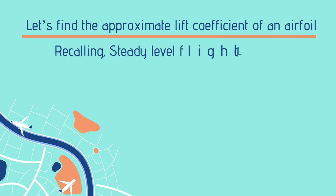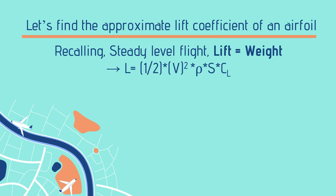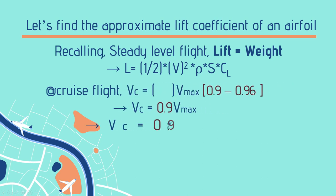Recalling steady level flight — lift equals weight — so lift equals one-half rho V-squared times S times CL. At cruise, cruise velocity equals approximately 90 to 96 percent of maximum velocity. Considering 90 percent: V_cruise = 0.9 × V_max. Substituting V_max of 290 m/s gives a cruise velocity of 261 m/s for this design.